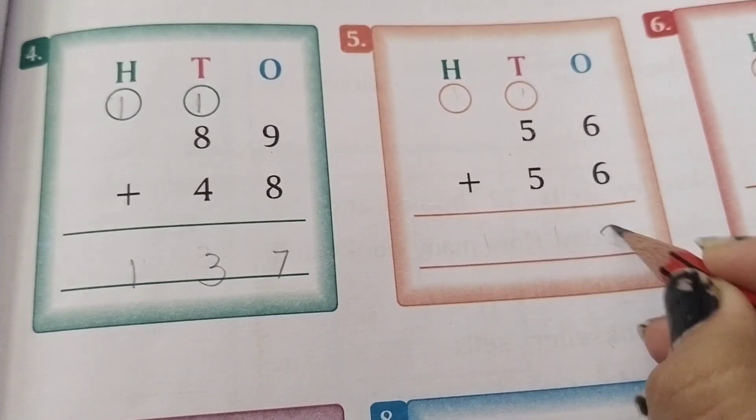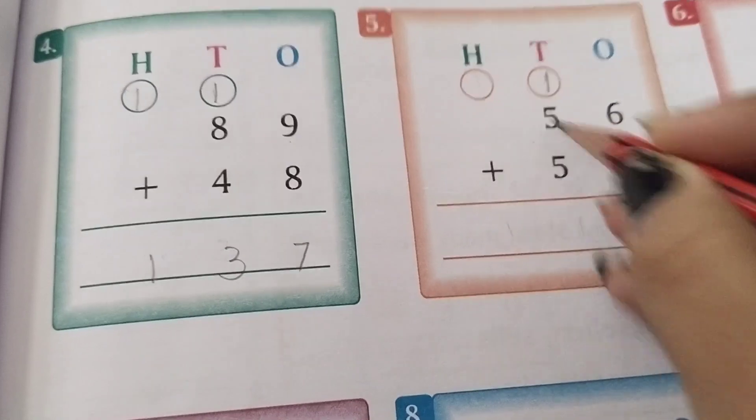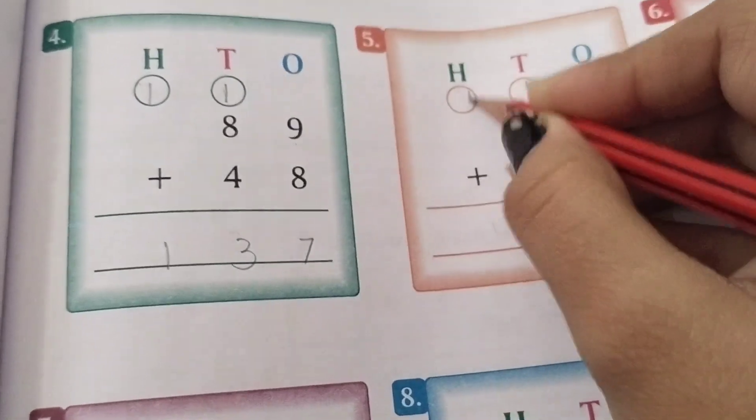Next we have 6 plus 6, which is 12. We write 2 here and carry 1. Then 5 plus 5 equals 10, plus 1 equals 11. We write 1, then 1 here.